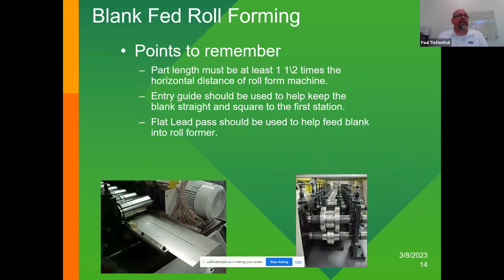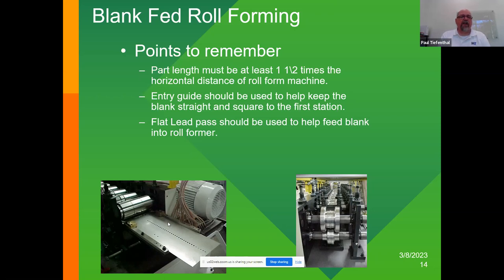Points to remember when doing blank fed roll forming: part lengths must be at least one and a half times the horizontal distance of the spindle — we like two to three as a max, but a minimum of one and a half. The reason is you have to have that part in at least two stations to keep it guiding through the mill. You're going to want a very good entry guide to keep the product square in the first pass. If it's not square going into the first pass, it's going to get worse as it carries through the roll former. I like to have a flat pass with no forming in that first pass, just to help keep it square.